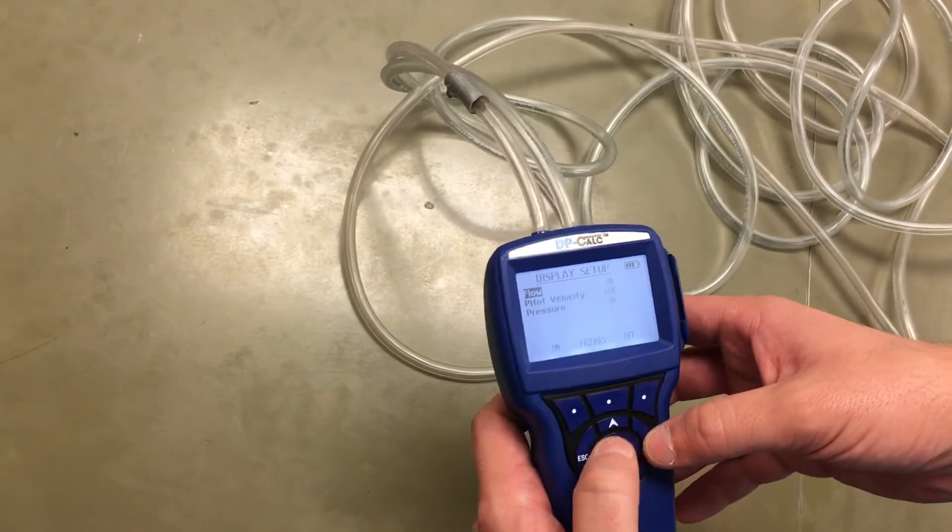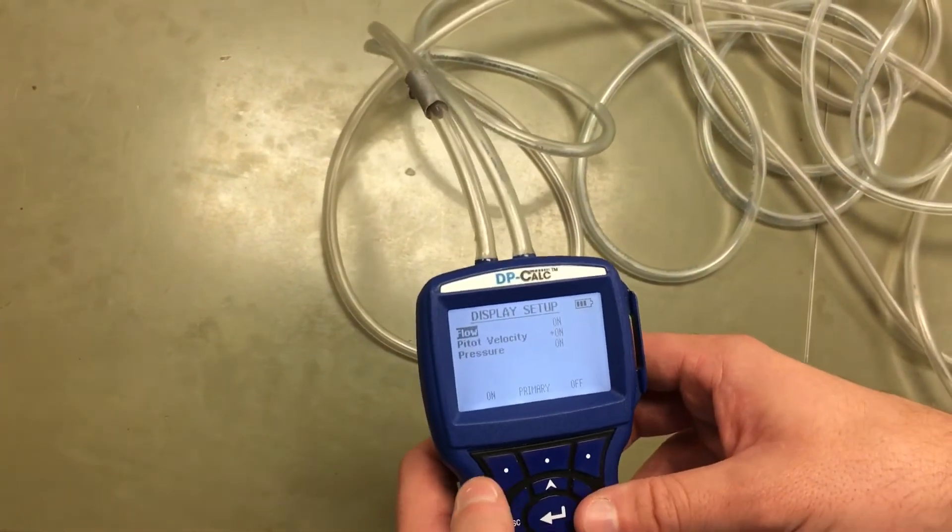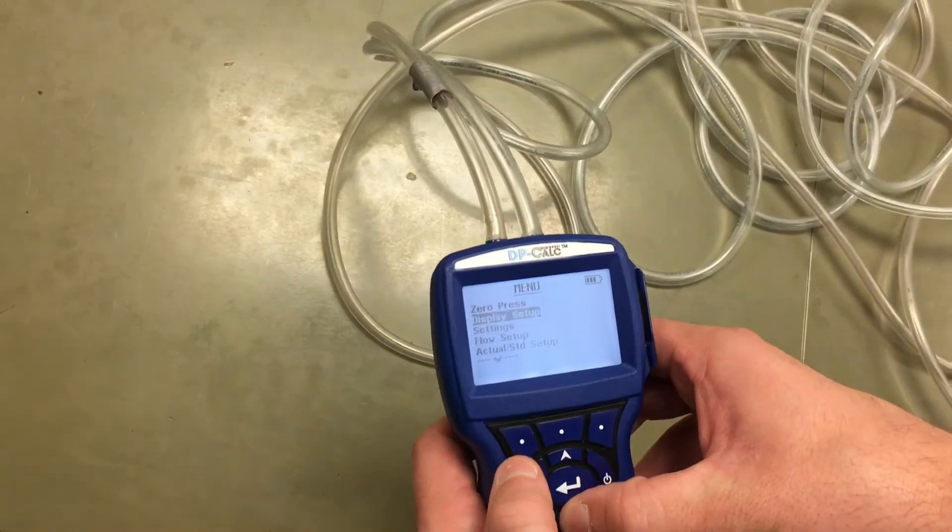We'll set up the display to make sure it's showing all the parameters we want: the flow, the velocity, and the velocity pressure. That's how we want it.